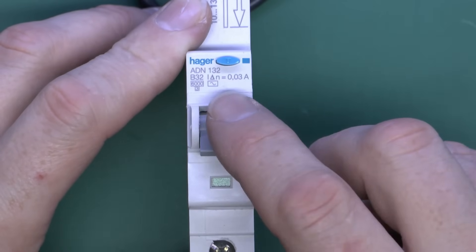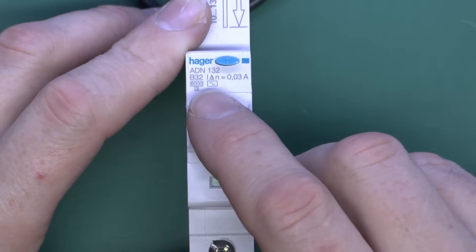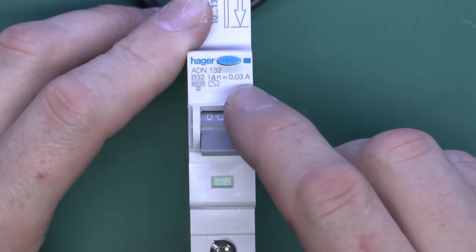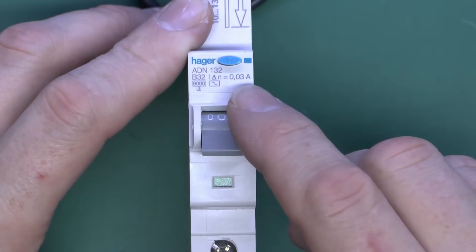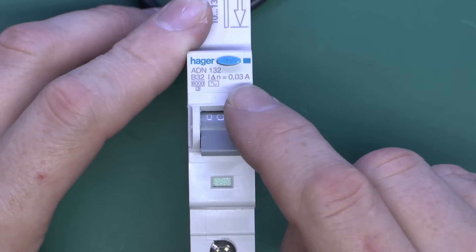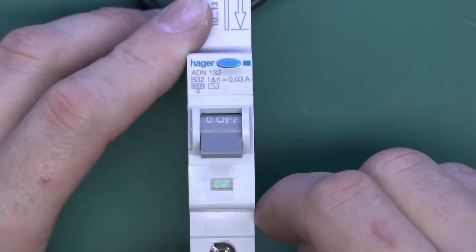And then on the other side here we've actually got the tripping current, which is shown as I delta N, and that's 0.03 amps or 30 milliamps in this case. So you've got the two functions built in there.